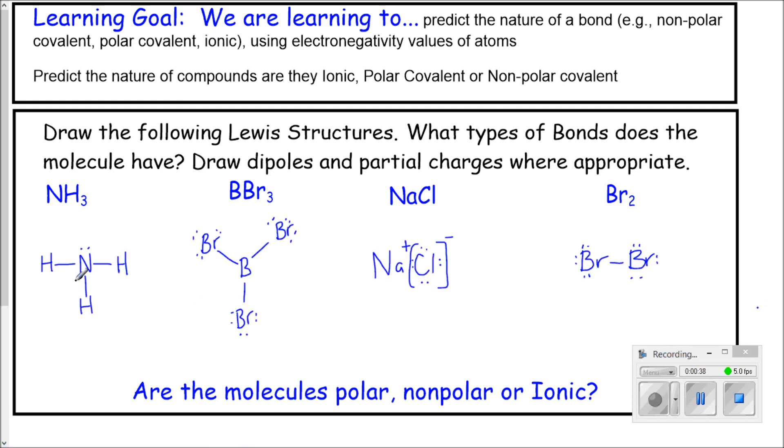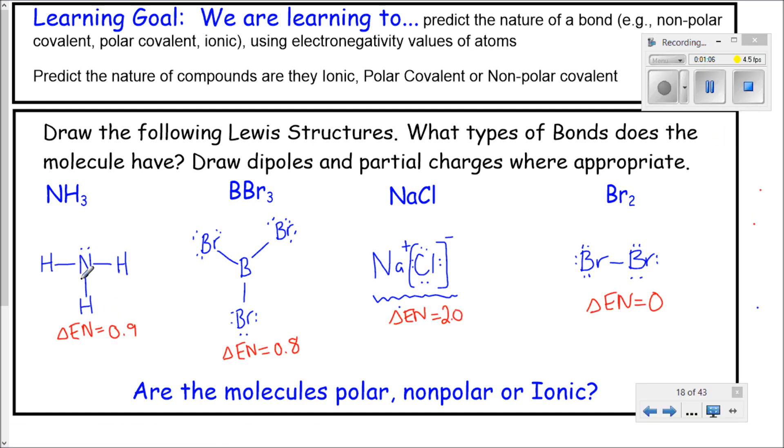So far what I did is I drew the Lewis structures for each covalent compound with lines and each ionic compound with just ions. Now, it says to draw the dipoles and partial charges where necessary. In order to do that, we have to look at our electronegativity chart and figure out what kind of bonds there are. What we do is we subtract the higher electronegativity from the lower electronegativity. These are the values and difference of ENs that I get for each one of my compounds here.